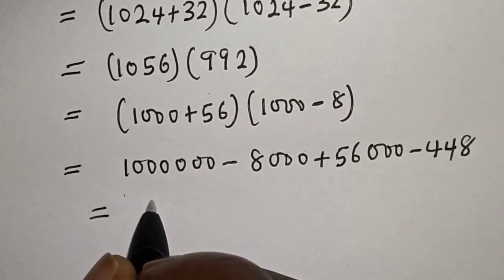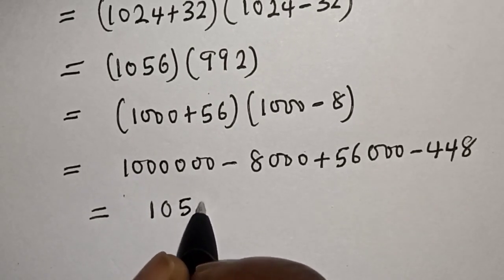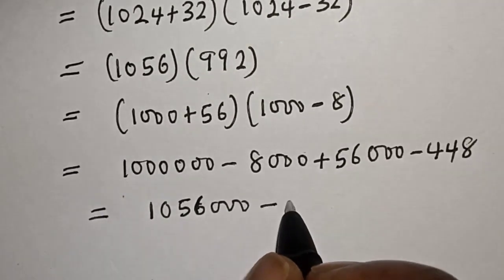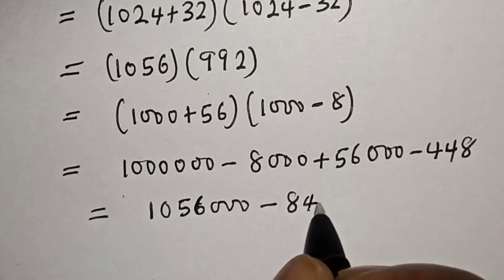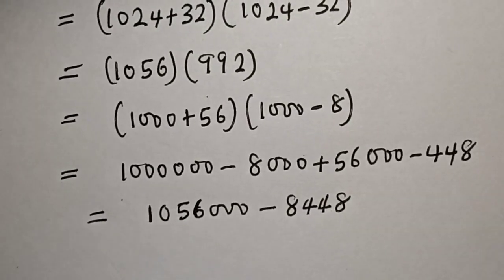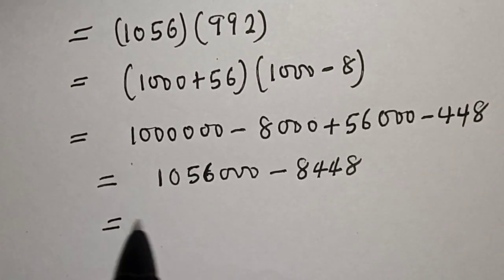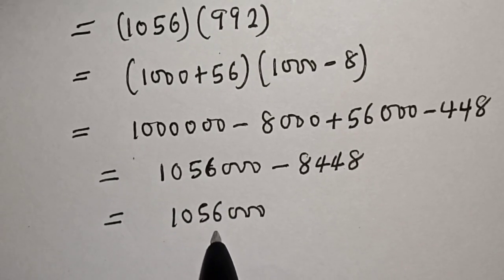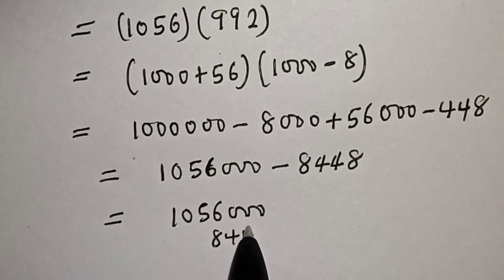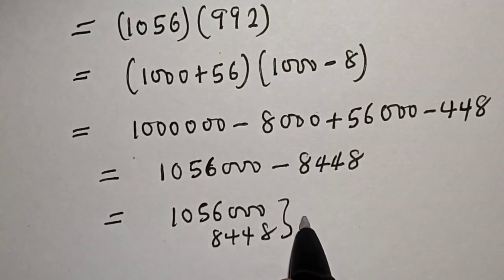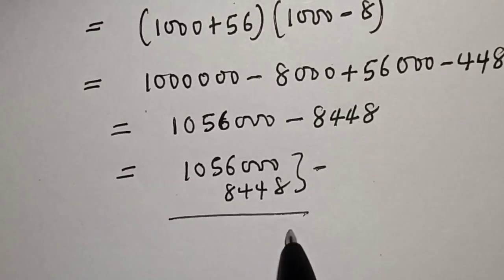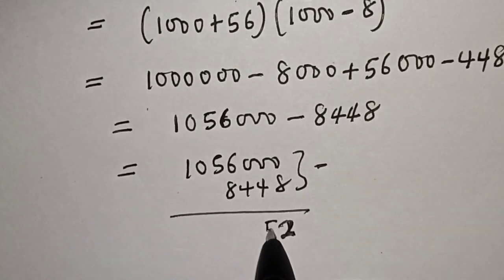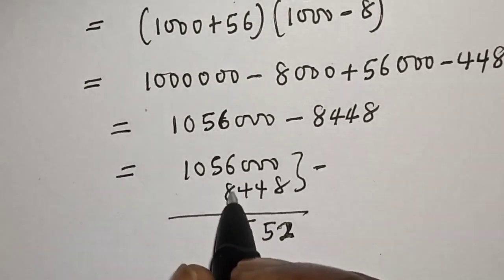Let's add these together: 1 million plus 56000 is 1,056,000, minus 8448. Let's subtract: 1,056,000 minus 8,448 gives us the digits — we have 1,056,000 minus 8,448, which works out to 1,047,552.